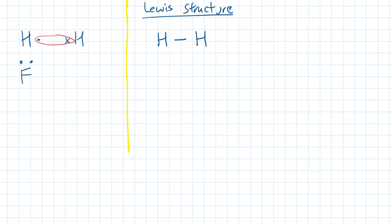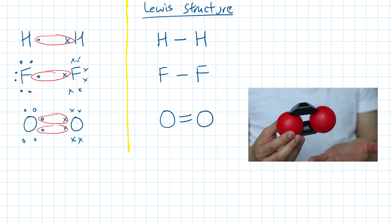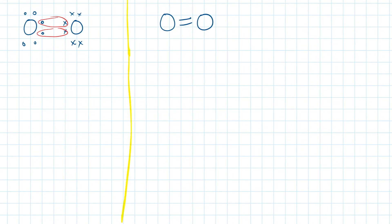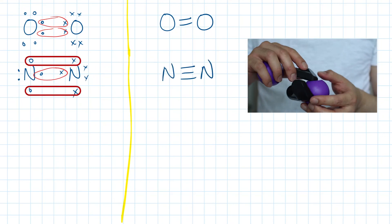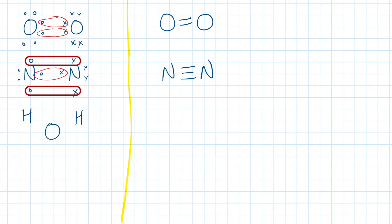Fluorine has seven valence electrons and needs to borrow one electron from the adjacent fluorine to become chemically stable. Oxygen has six valence electrons and will need to borrow two valence electrons from the oxygen on the right to become chemically stable. Nitrogen has five valence electrons and will need to borrow three electrons from the adjacent nitrogen to become chemically stable. For a water molecule, each hydrogen will borrow one valence electron from the oxygen, and the oxygen will borrow one valence electron from each of the two hydrogens.